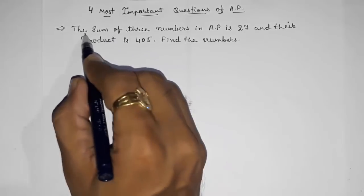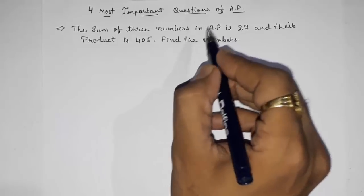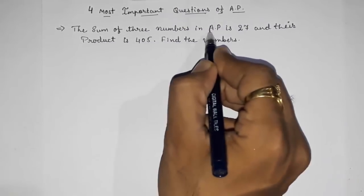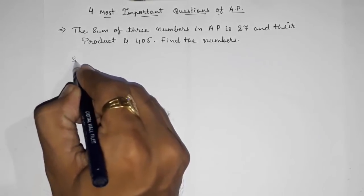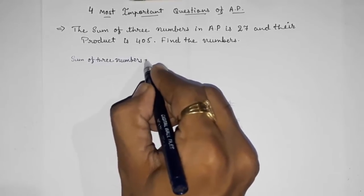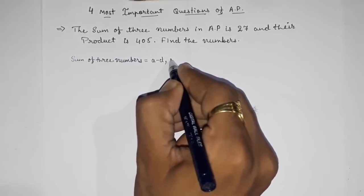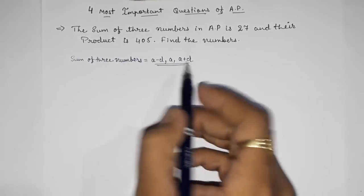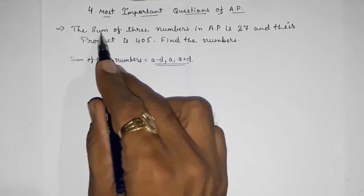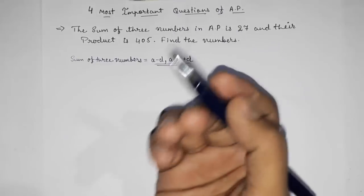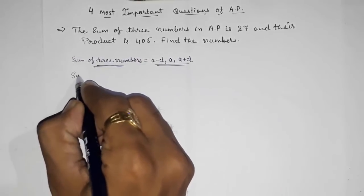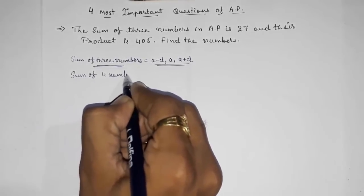I selected this question because in the textbook you will not get any such type of question, and here we have to use a special technique. When they give you the sum of three numbers in AP, at that time we have to suppose the numbers as A minus D, A, and A plus D. Sometimes they will give the sum of four numbers, sometimes five numbers — at that time we have to suppose differently.